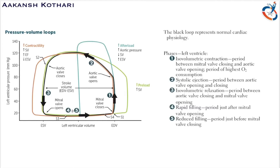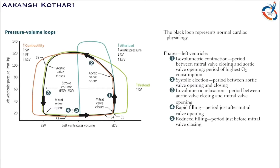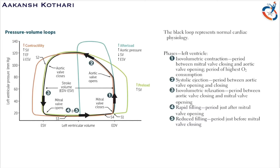Let's talk about the basic and normal physiology. This black loop represents the normal physiology of a heart. The key phases represented in the pressure volume loop start with the end diastolic volume — the maximum volume present in the left ventricle — and the end systolic volume, which is the minimum volume present in the left ventricle.